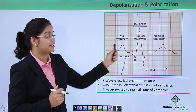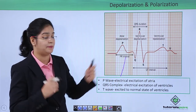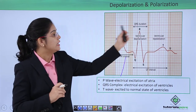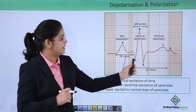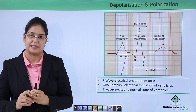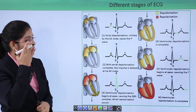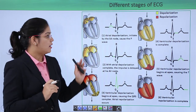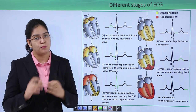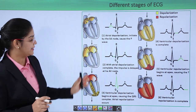Again: atrial depolarization is represented by P, then comes the QRS complex — ventricular depolarization — and just after that comes the T wave, meaning ventricular repolarization. This is a complete cardiac cycle. This picture is showing three things together: the impulse initiation, the neuromuscular tissue, and the graph with the cardiac cycle represented by the heart.